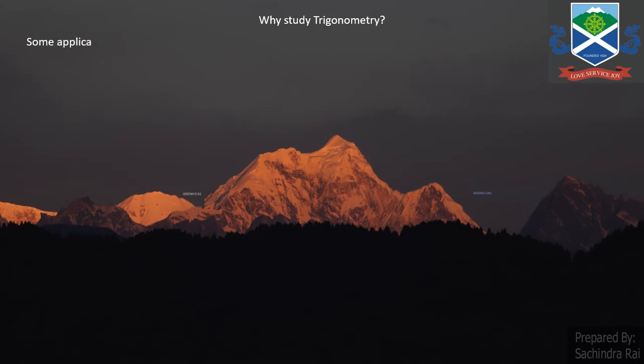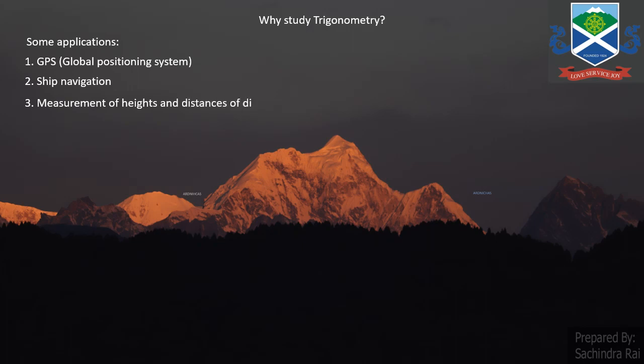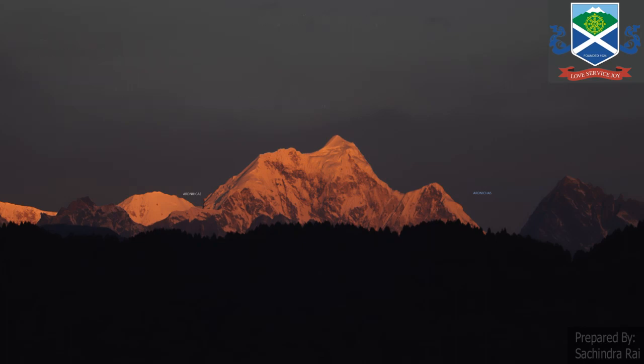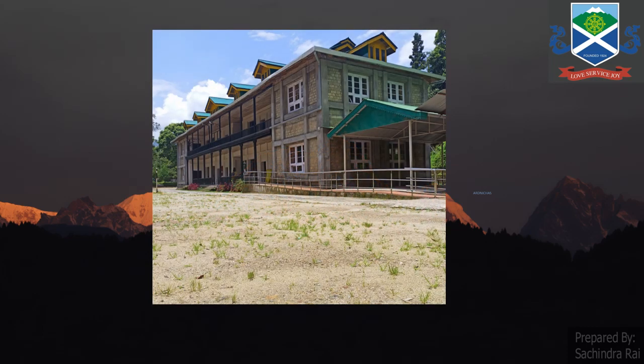There are some applications of trigonometry: GPS (Global Positioning System), ship navigation, and measurement of height and distances of different objects. Let us take this example of this beautiful building here. If you want to measure the height of this building, how would you do it? Either you need to have a big long tape and climb up this wall — if you are Spider-Man, then you can do it — but we know that it's impossible to climb up this wall.